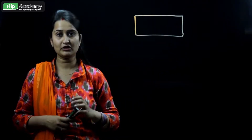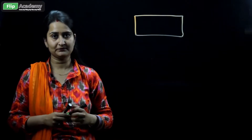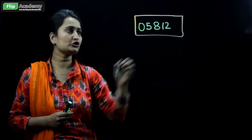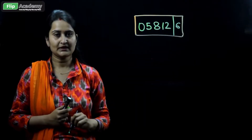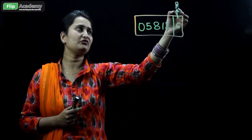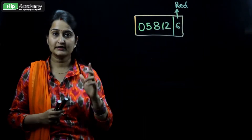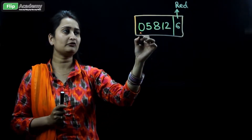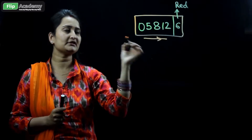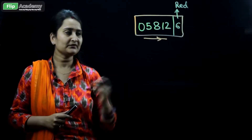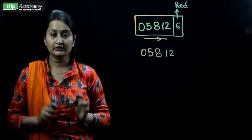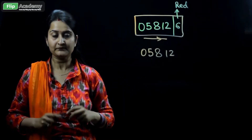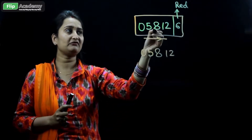For example, if we draw a display of the electric meter, this is the display where you see the readings or digits. I have taken a number: 05812, and there is also a digit — say 6. Now, the first point says to always start reading from left to right, that is start from 0 and proceed towards 2. So the reading is 05812. Don't count it as 21850 — that is the wrong order.